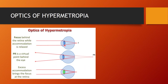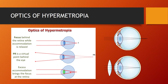In a hypermetropic eye, rays are focused behind the retina — there is a virtual point behind the eye. To achieve a sharp image, accommodation occurs even for far objects and the image is brought onto the retina. This can be corrected by placing a plus lens so that accommodation can be at rest and the image is focused onto the retina.